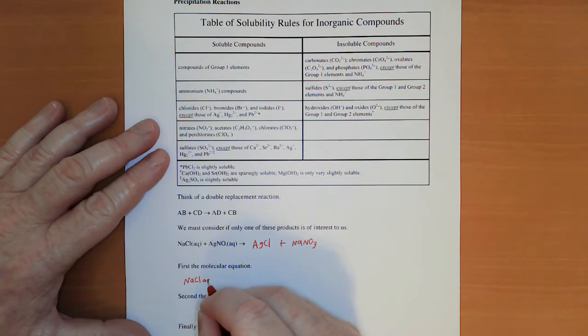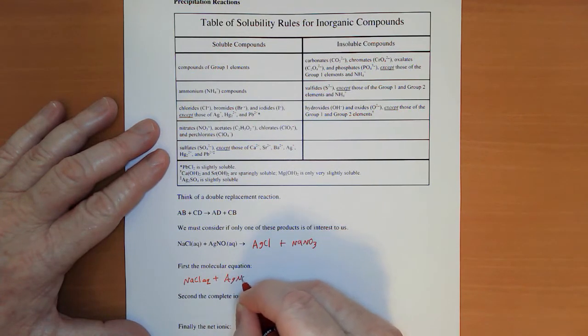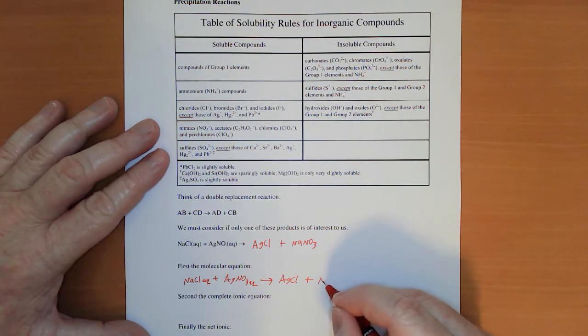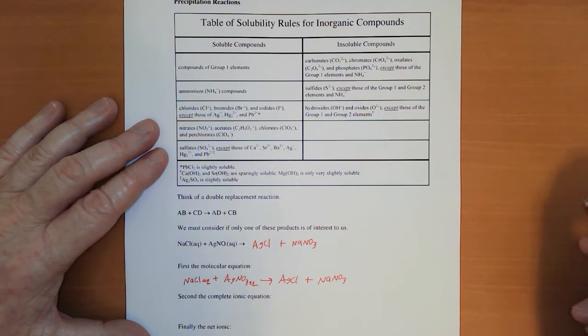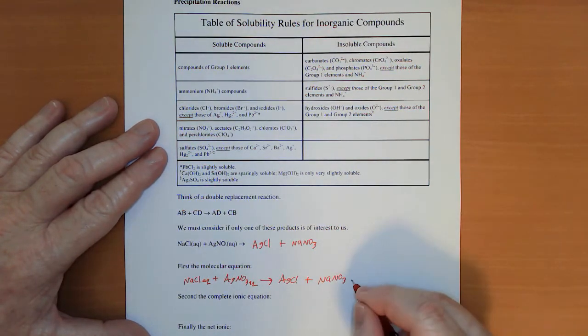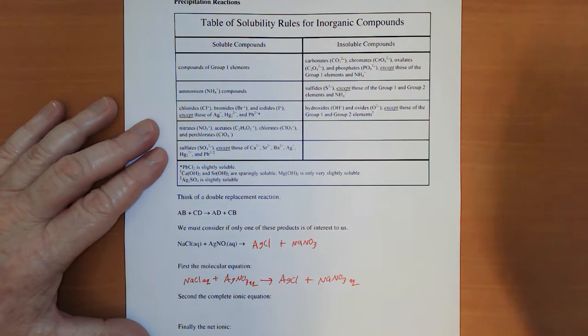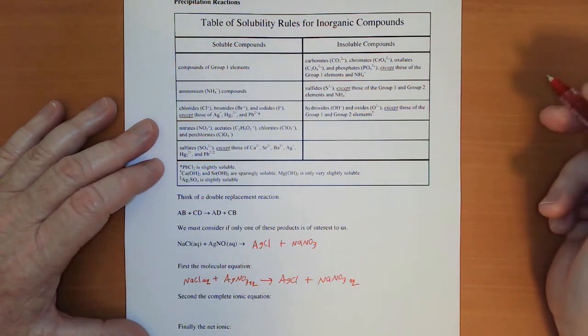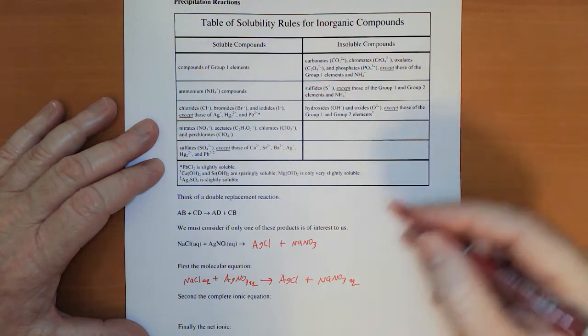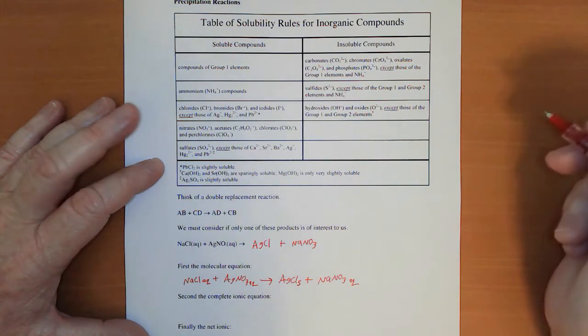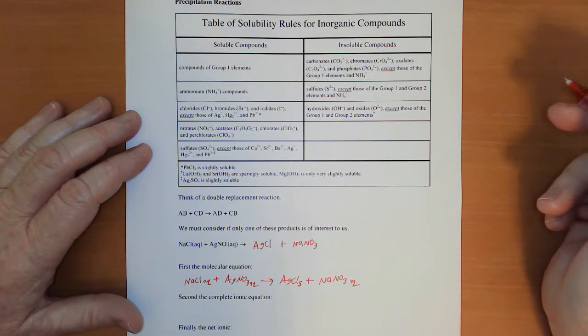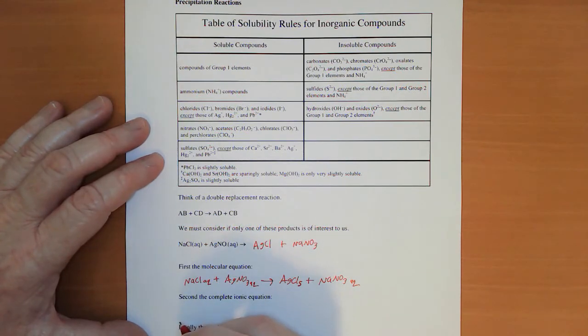When presented with the reactants, first we'll do the molecular equation which is NaCl aqueous plus AgNO3 aqueous to give us AgCl plus NaNO3. We include states of matter. Nitrates are always soluble and group ones are always soluble, either way that's soluble. Now chlorides are mostly soluble except with silver, lead, and mercury ions. That's a solid. Silver precipitates with just about everything. Only silver nitrate is soluble, we mentioned that in the QA lecture last week.